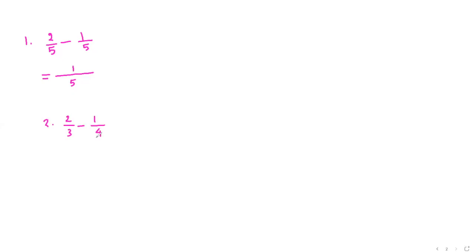So we have 2 3rd minus 1 4th. We are subtracting. Same thing we are going to multiply across. 4 times 2 is 8. And we are going to multiply 3 and 1. 3 times 1 is 3. Then as our operation here is subtraction, we have to subtract 8 and 3. So 8 minus 3 is 5 on the top. And in the bottom, we have to multiply these two. So 4 times 3 is 12. So 5 over 12 is the answer for this one.